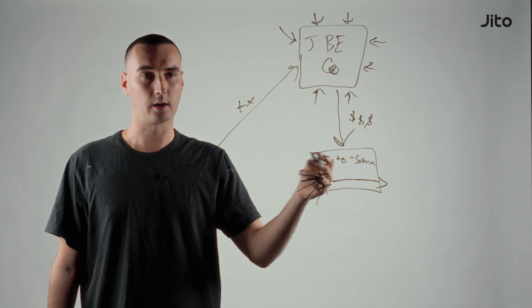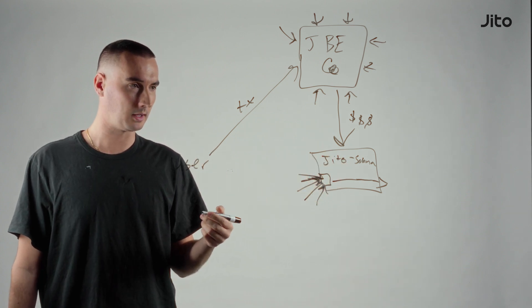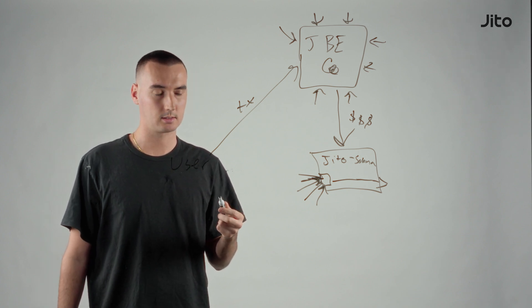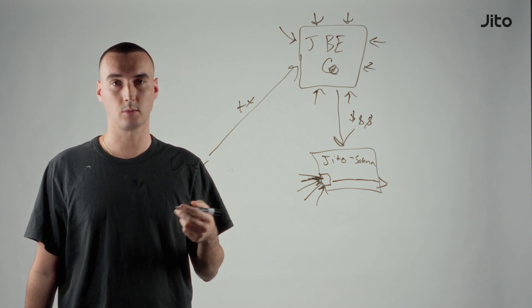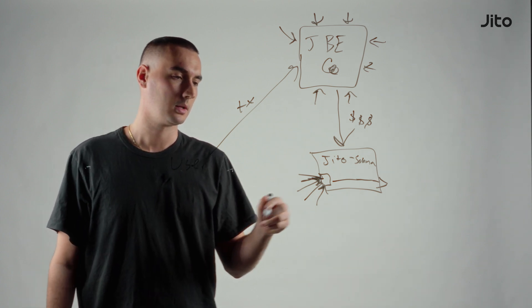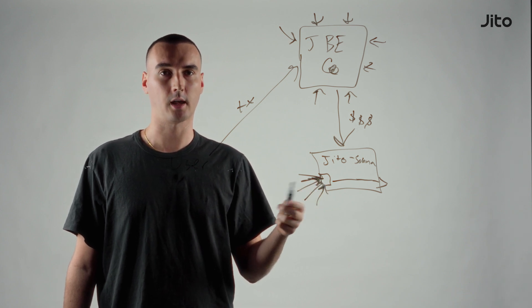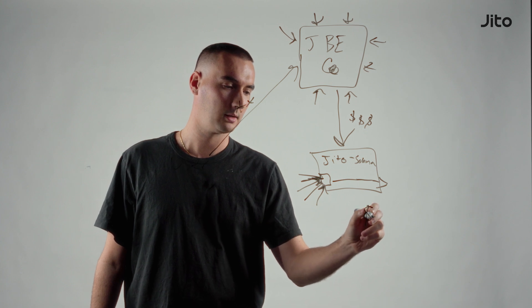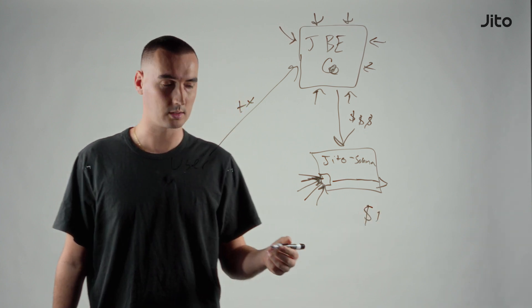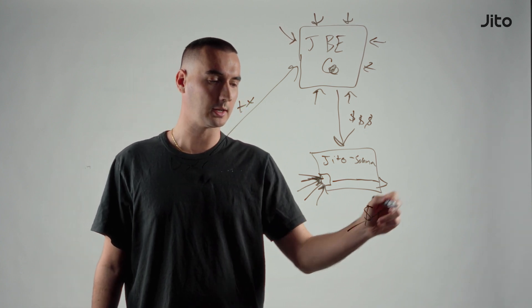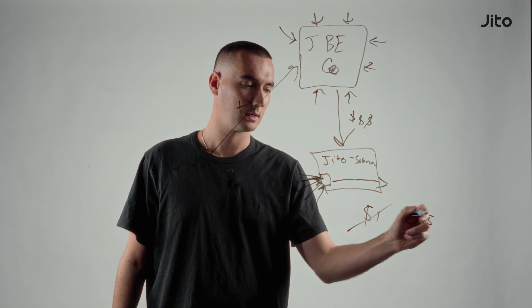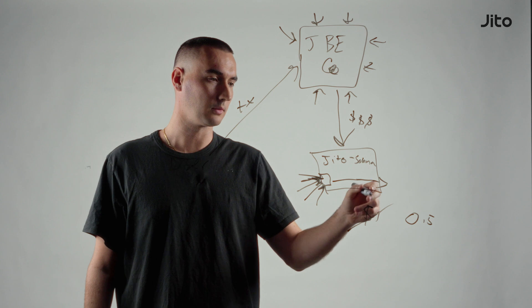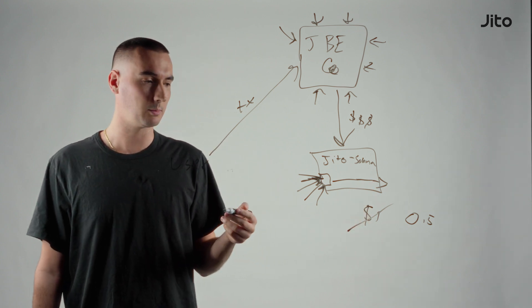Another thing about the tips is that today, most important for validators, the priority fee is 50% burned. So if you're a validator and you get paid like a dollar or one SOL, that's immediately cut in half, you only get half of that. And so with Jito tips you get the full amount - if you get one SOL, you get to keep it.